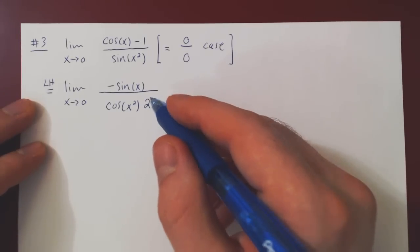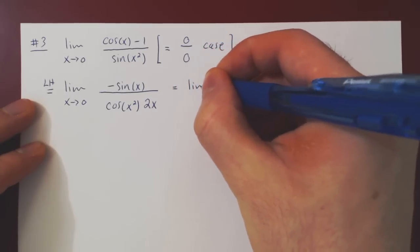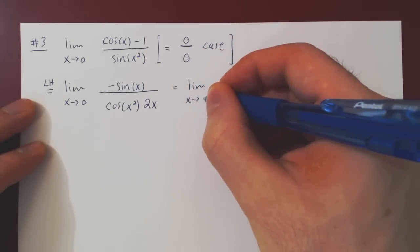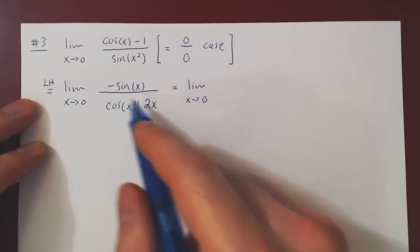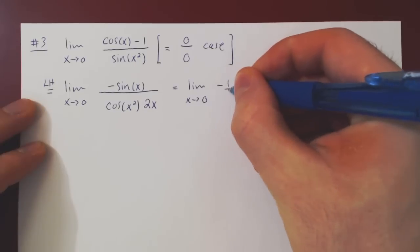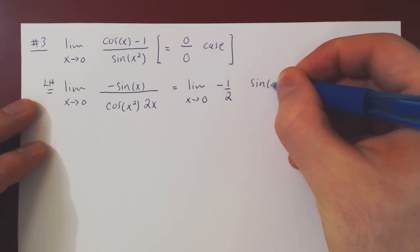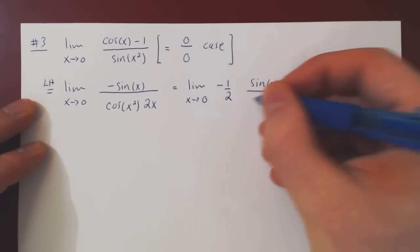Now, one thing we'll do here is, before we consider our case, we'll do two things. We have a negative 1 half as a multiple of our limit, so we can factor it up front, and then we're left with sin of x over x times cos of x squared.